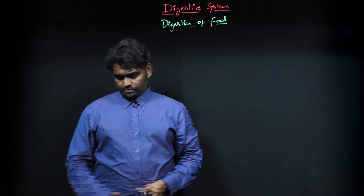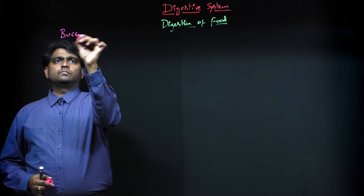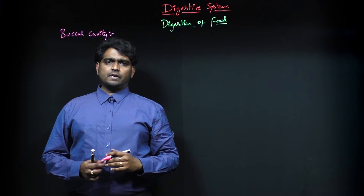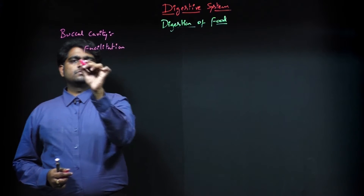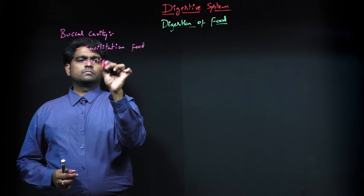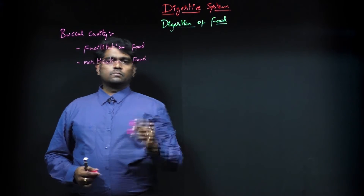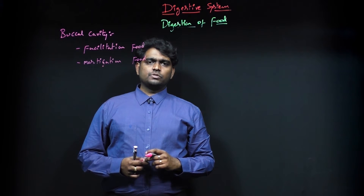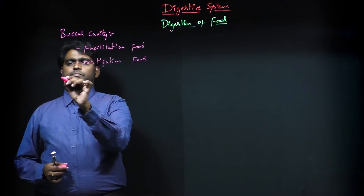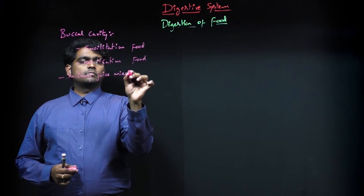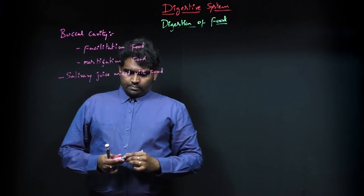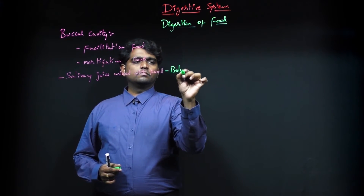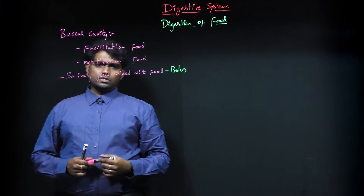In the buccal cavity there are two important processes: one is facilitation and the second one is mastication. The digestive juice in the buccal cavity is called salivary juice. Salivary juice is mixed with food — that is facilitation. After mixing of this juice, the food is called bolus.